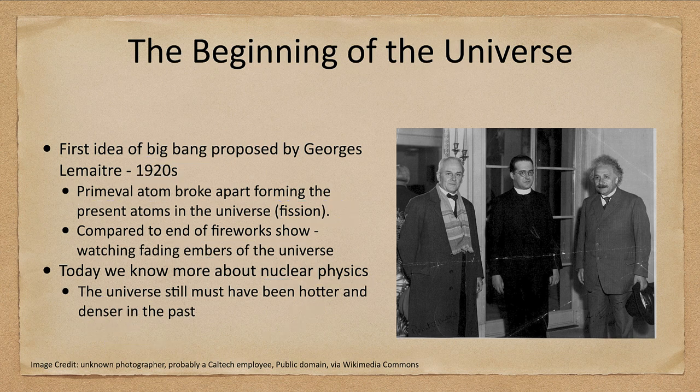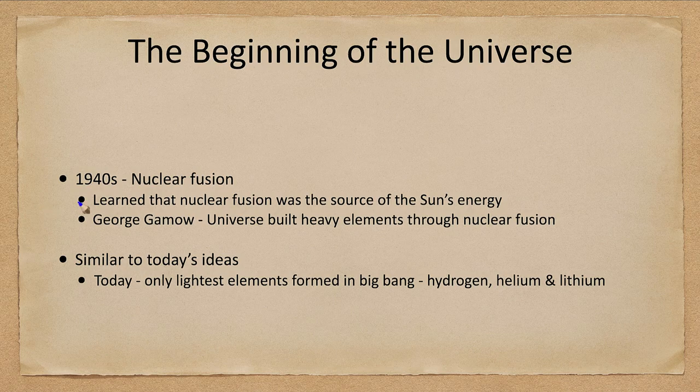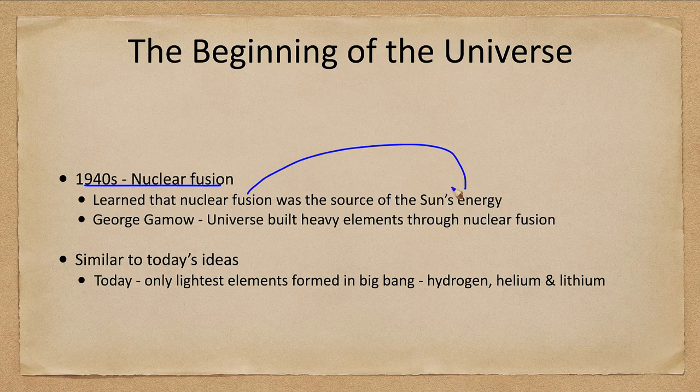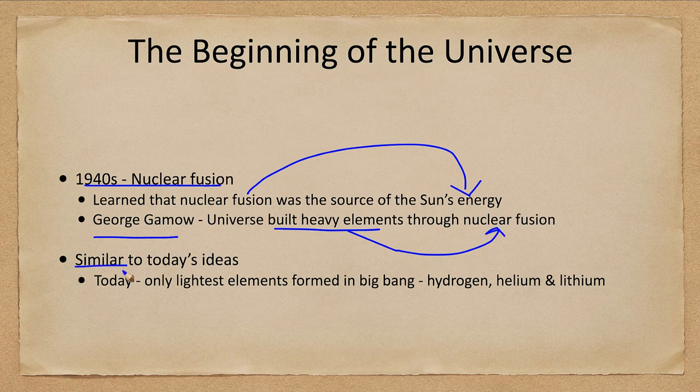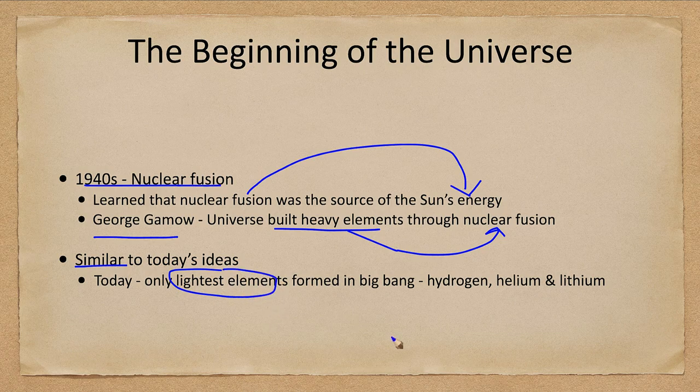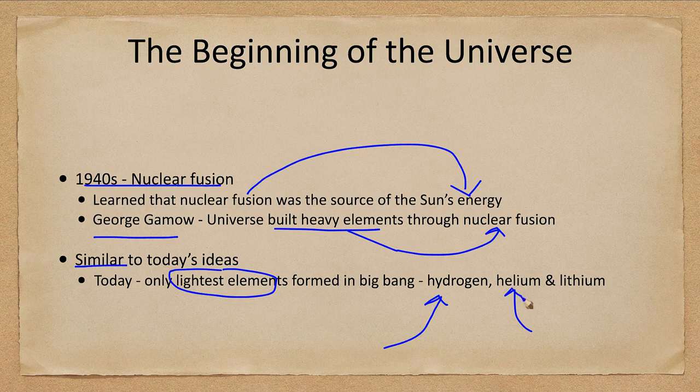In the 1940s we had the idea of nuclear fusion, and we learned that nuclear fusion was the source of energy for the Sun. George Gamow suggested that the universe built the heavy elements through nuclear fusion. This is rather similar to what we believe today, although today we know that only the lightest elements formed in the Big Bang—hydrogen, helium, and a small amount of lithium. Everything else was created through other methods.